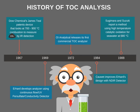In 1965, the first commercial TOC analyzer was developed using gas chromatography with IR detection added later. In 1967, James Teal of Dow Chemical patented a device using 700–900°C combustion to measure CO₂ by IR detection. In 1969, Earhart developed an analyzer using continuous flow, UV persulfate, and conductivity detection. In 1972, OI Analytical released its first commercial TOC analyzer. In 1984, Calwet improved on Earhart's design with an NDIR detector. In 1988, Sugimura and Suzuki reported a method using high-temperature catalytic oxidation for seawater at 680°C.